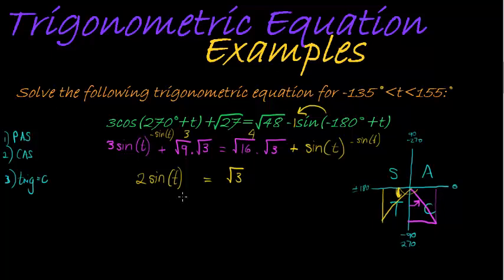And then I simplify to get my single trig ratio equal to a constant. Sine t is the square root of 3 over 2. Now this, once I get to that point, the next step is to find my reference angle.